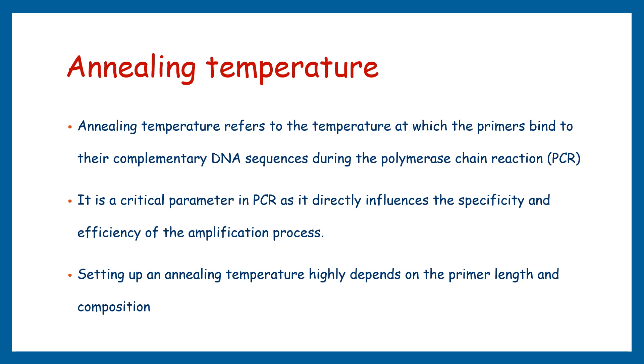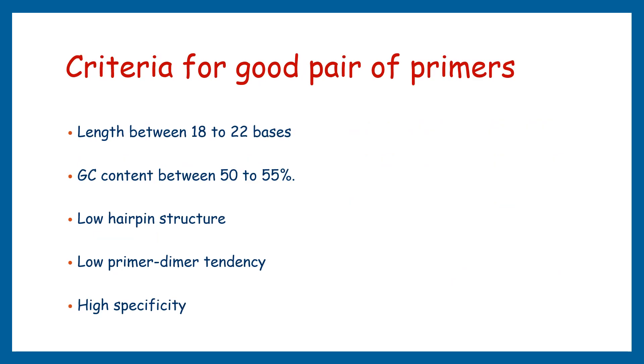We should understand what are the criteria for a good pair of primers. Primers should not be more than 18 to 22 bases. They should contain GC content between 50 to 55 percent. They should have low hairpin structure and low primer dimer tendency. They should be highly specific to target sequences.